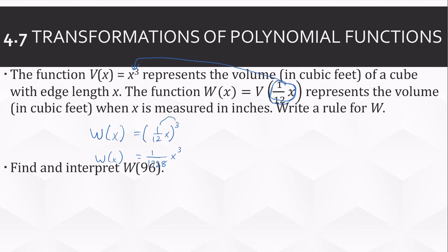Now we're supposed to find and interpret W(96). So we'll plug in a 96. So it'll be 1 over 1,728 times 96 cubed. Punch that in the calculator. You get 512. And that was our volume in inches. So that would be inches cubed. My mistake. It says up here, it's in cubic feet. Our input is in inches, but the output is in feet. So it's cubic feet.